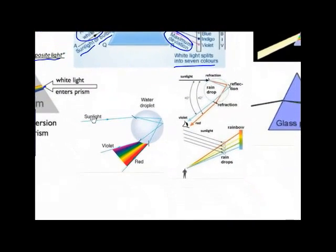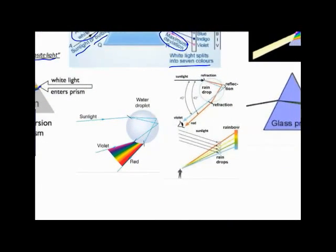The concept of rainbow formation: when sunlight falls on a water droplet, it undergoes both reflection and refraction, including total internal reflection at the surface of the water droplets, which is why rainbows are formed.